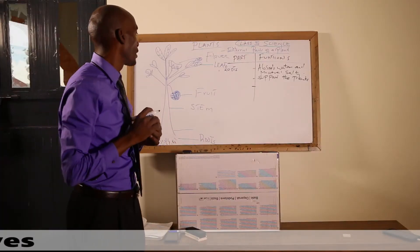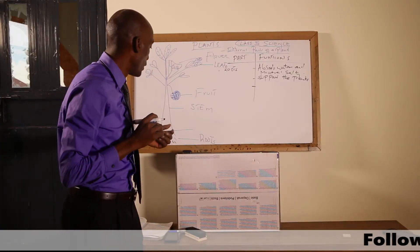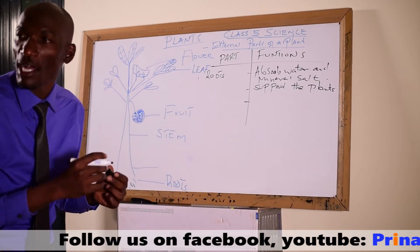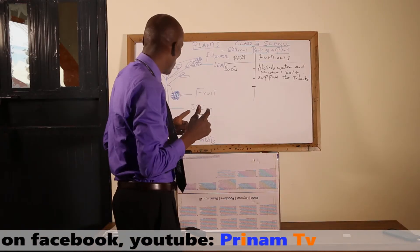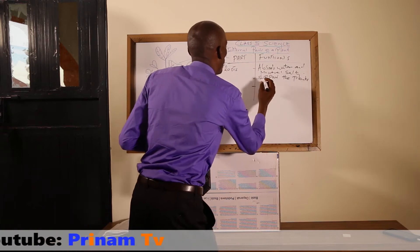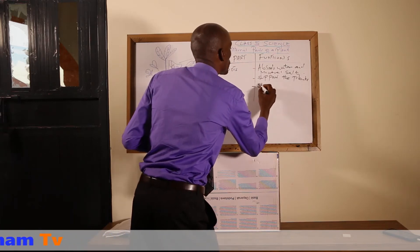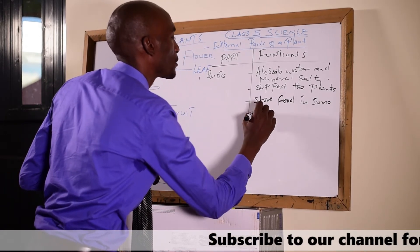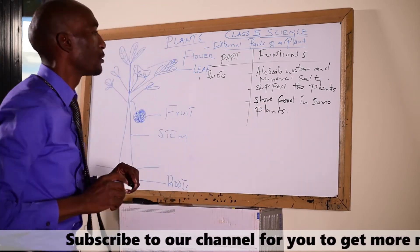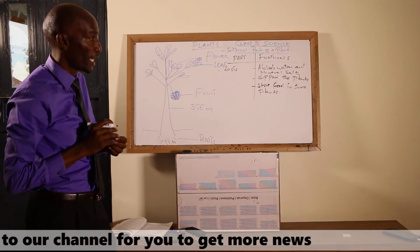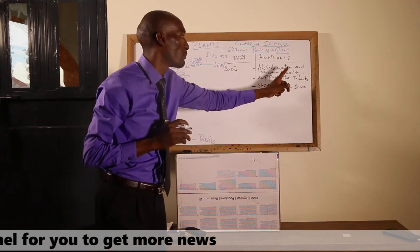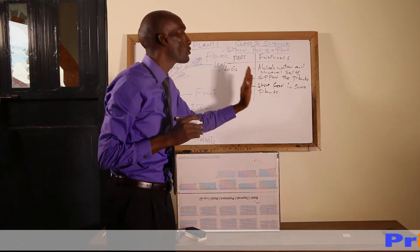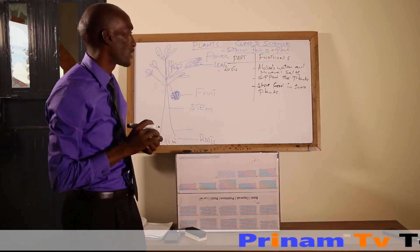Number three, in some plants the food of the plant is stored in the root. For example, in cassava, we eat the roots. So one other function of the root is to store food — not in all plants, but in some plants. So how many functions do we have for the roots today? Number one: absorb water and mineral salts. Number two: support the plant. Number three: store food in some plants — not all plants store food there.